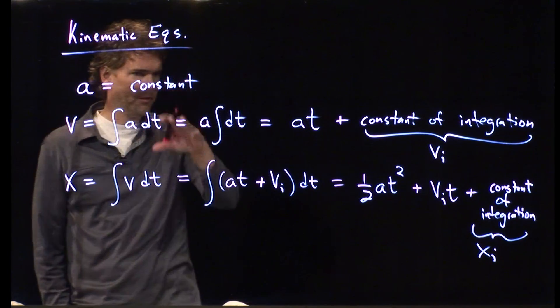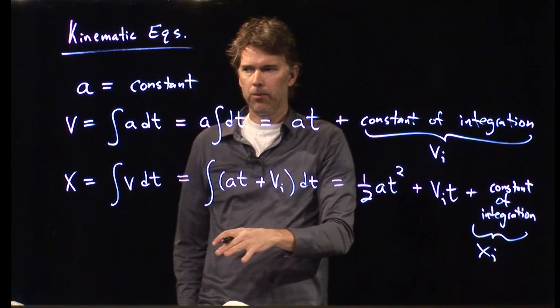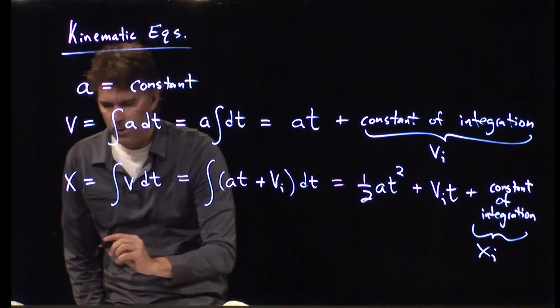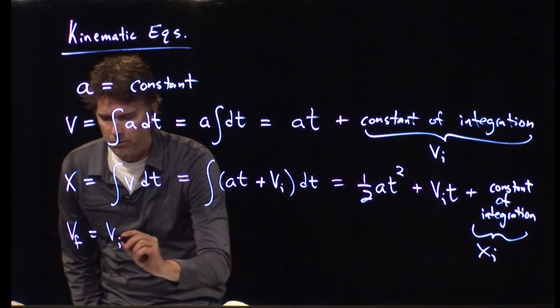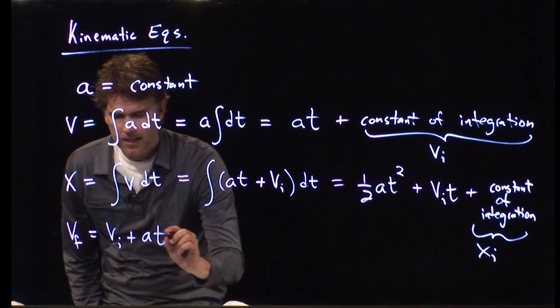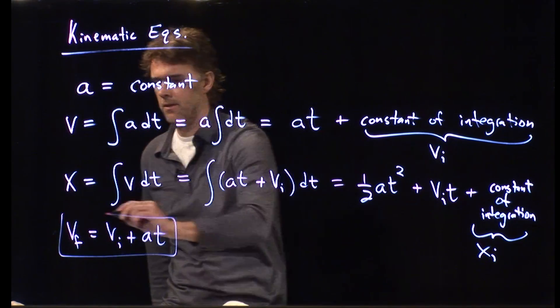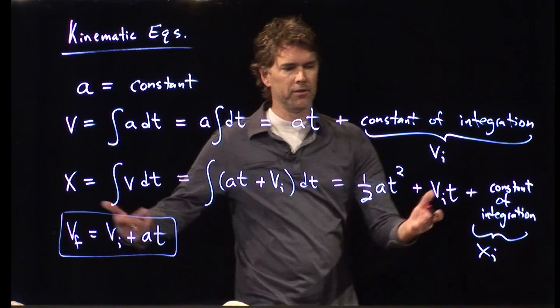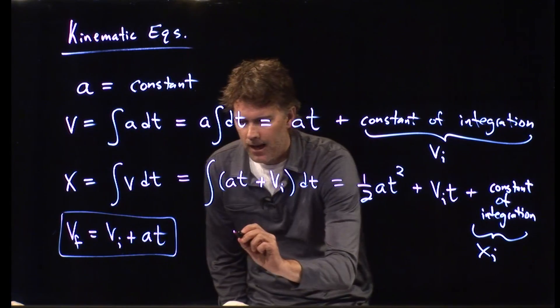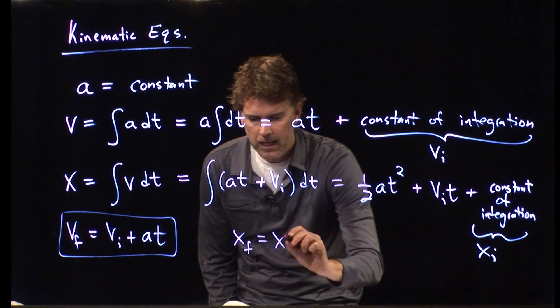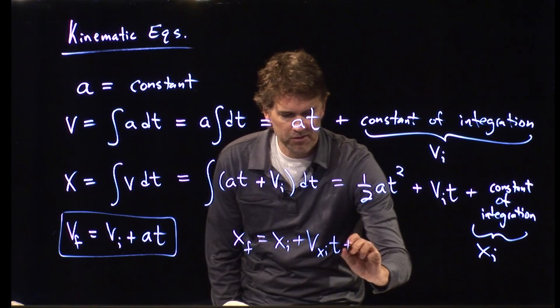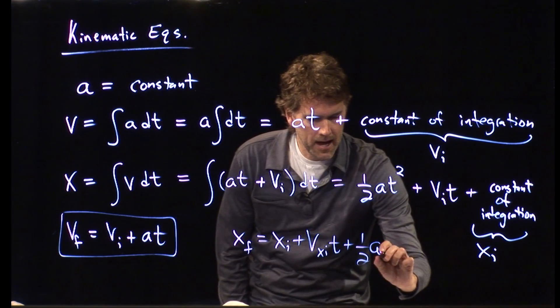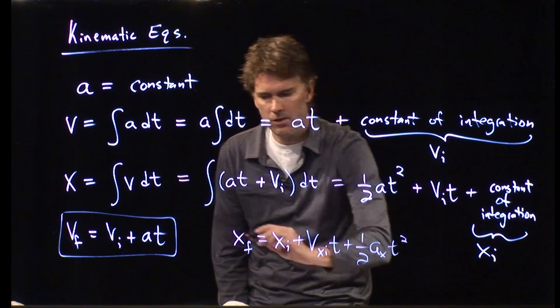And so, look what happens. This is how the kinematic equations develop. We have this equation for v which becomes the following: Vf equals vi plus a times t. And we have this last equation for x which becomes xf equals xi plus vi times t plus one half a sub x t squared.